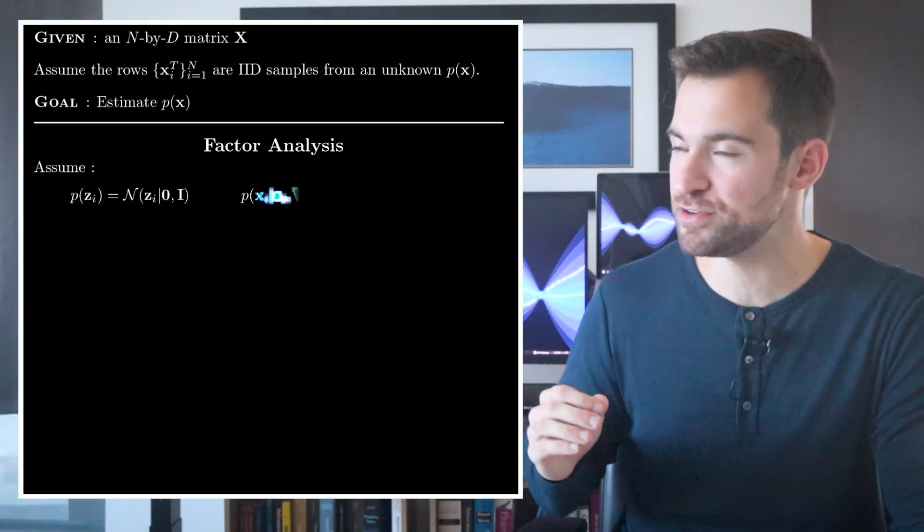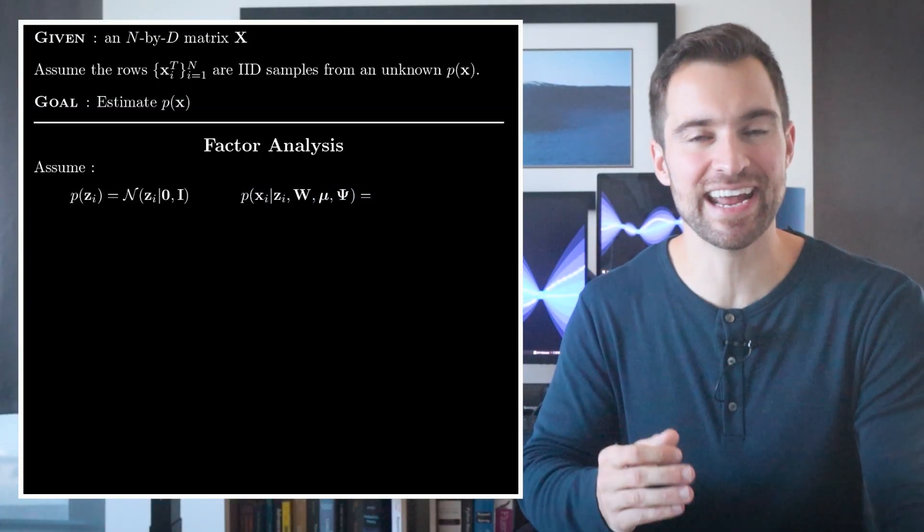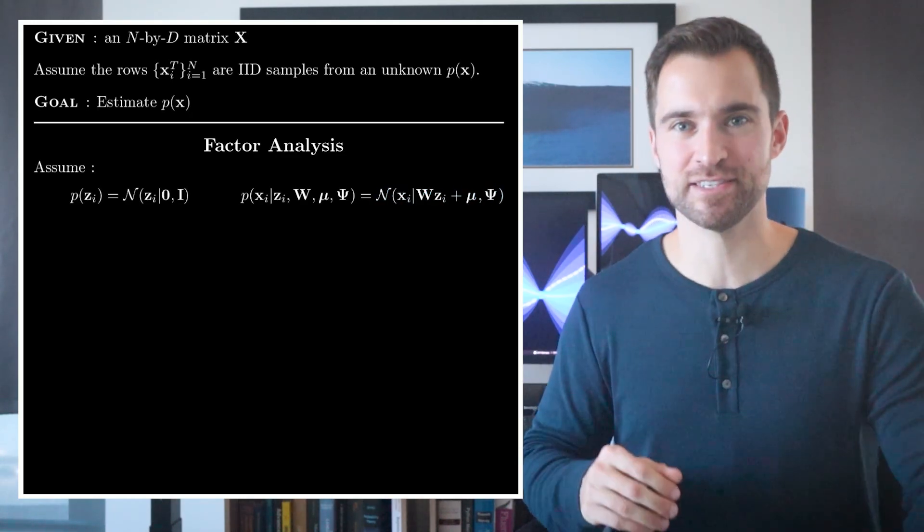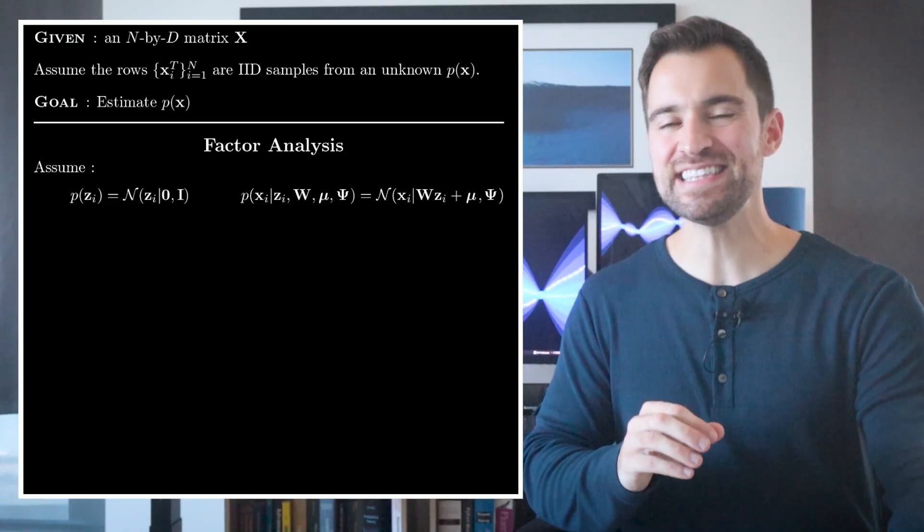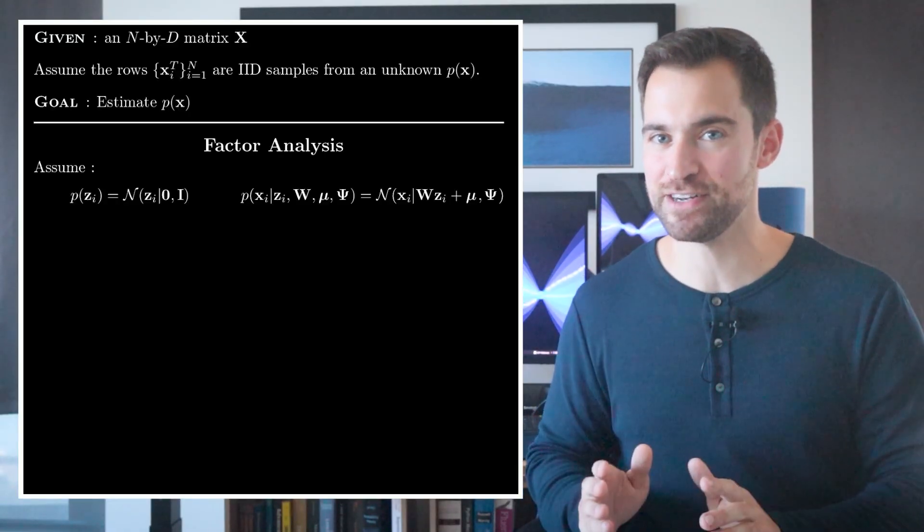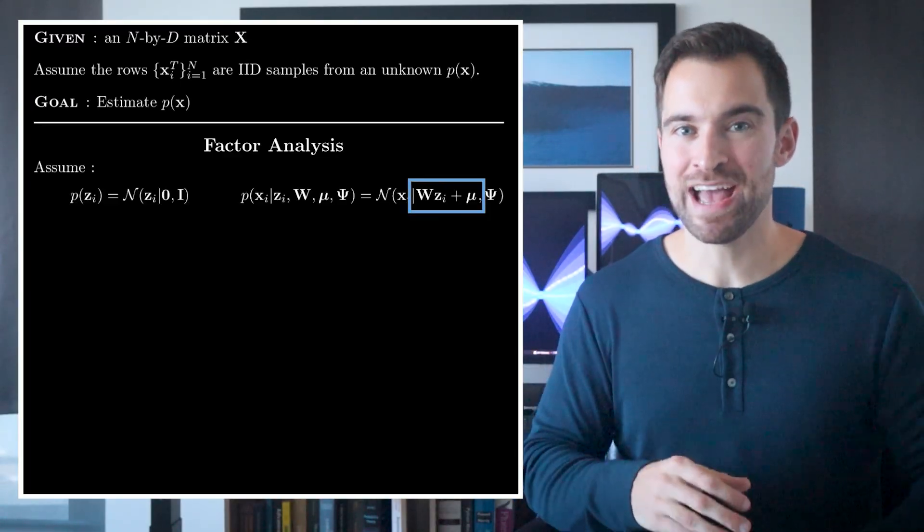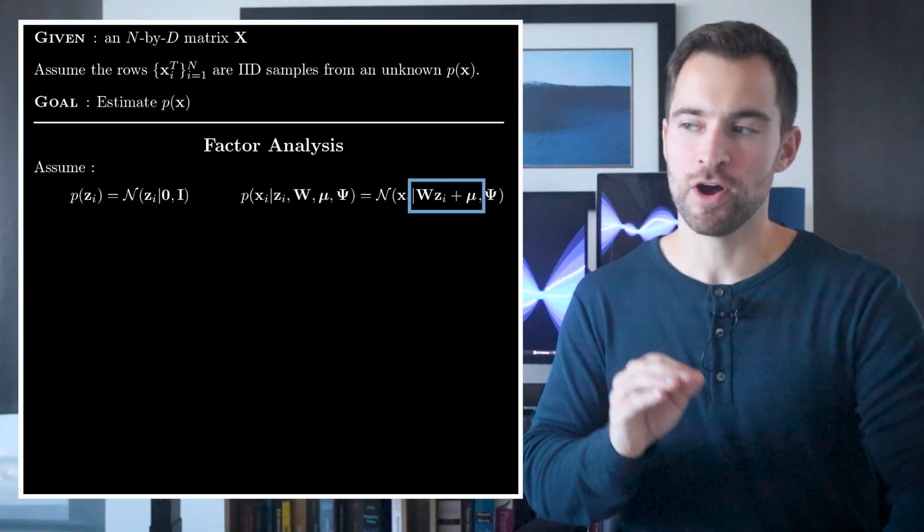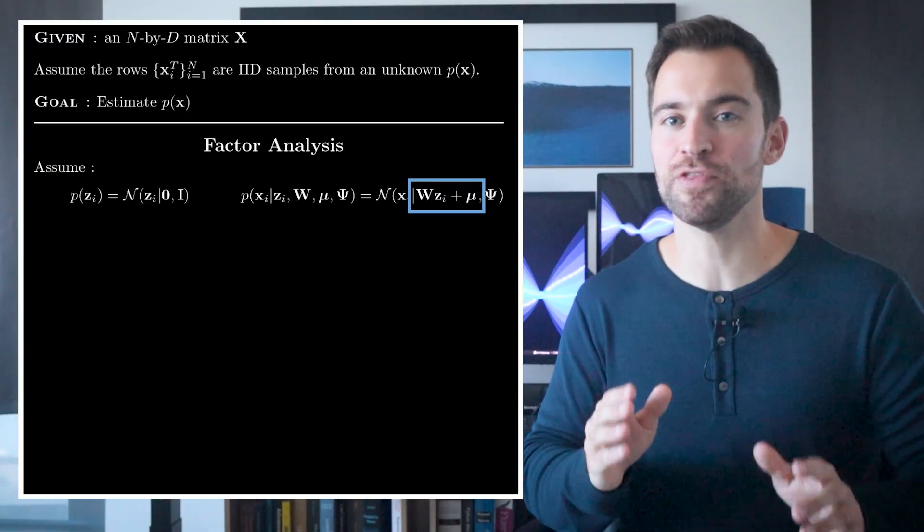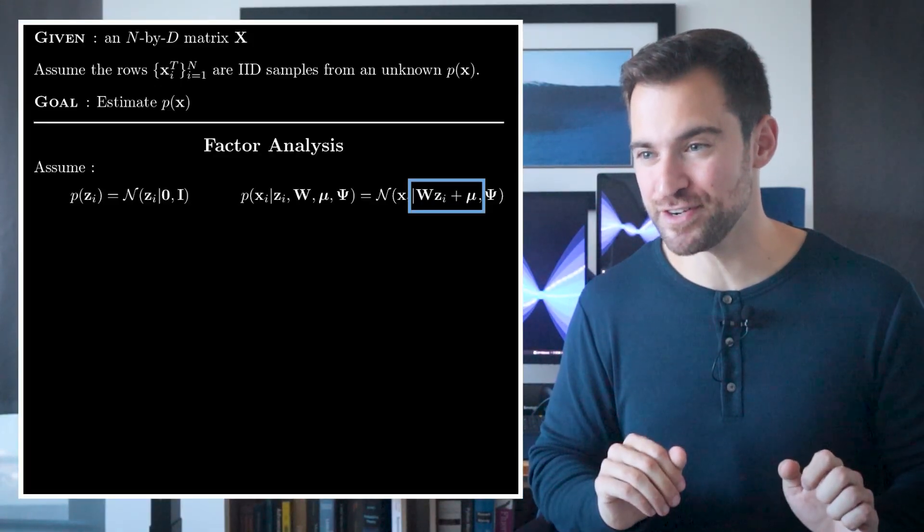Second, we'll assume the distribution of an XI conditional on knowing the associated ZI and all the model parameters is this. But what does this mean? Well, it says the density of XI is a multivariate normal with a certain mean and covariance matrix. The mean comes from matrix multiplying ZI by the matrix W and then adding the vector mu. Also, for your information, W is called the factor loading matrix and the ZIs are called the factors. Also, the ZIs are called the latent variables.